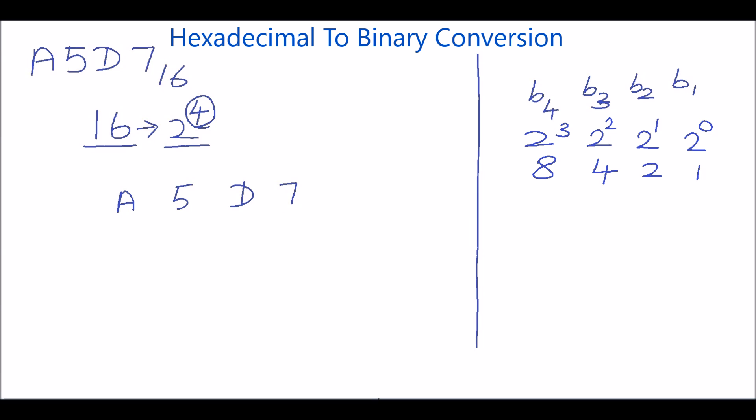First, we will individually convert each hexadecimal digit into its equivalent binary number. The first hexadecimal digit is 7. 7 can be represented as the sum of 4 plus 2 plus 1. So, put 1 in bit 1, bit 2, bit 3 positions and 0 in bit 4 position.